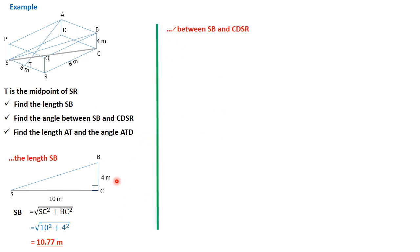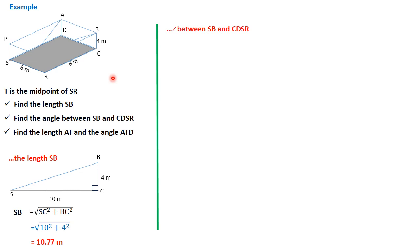BC was given as 4, so we already have that. Therefore the distance SB: using Pythagoras' theorem, SB equals the square root of SC squared plus BC squared — that's 10 squared plus 4 squared — giving 10.77 meters. The next question asks for the angle between SB and plane CDSR. The angle between a line and a plane is the angle between the line and its projection on the plane. The projection of SB on the plane CDSR is the line SC — SC is the shadow of SB on the plane CDSR.